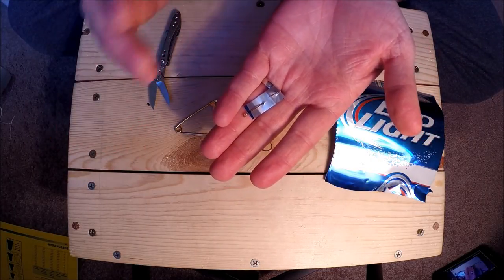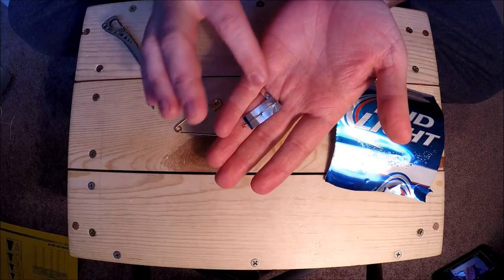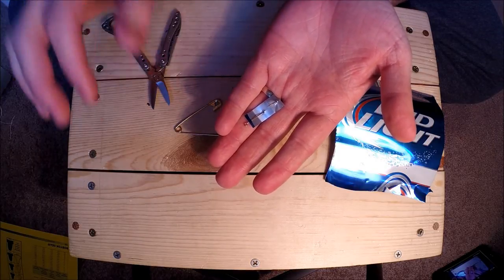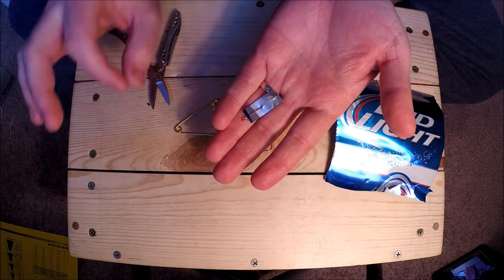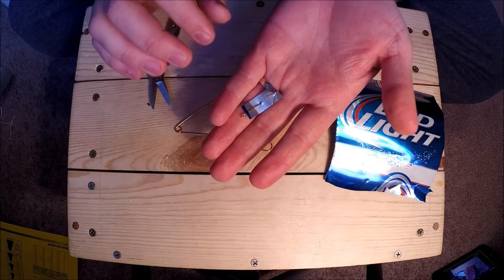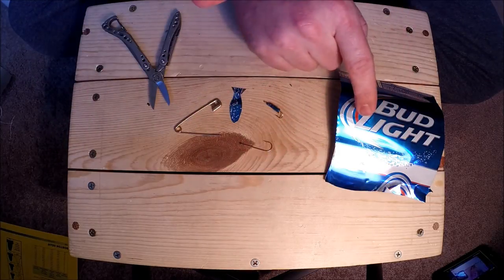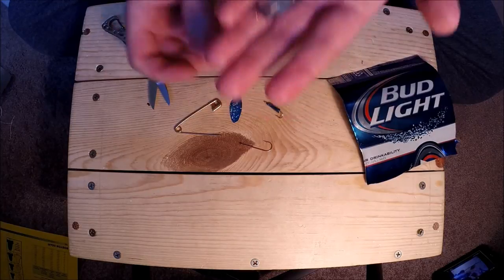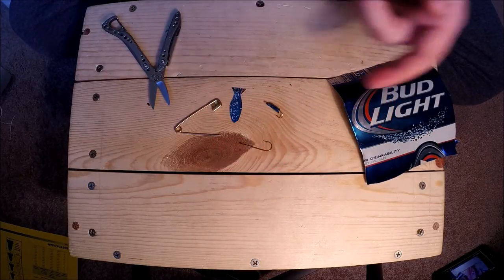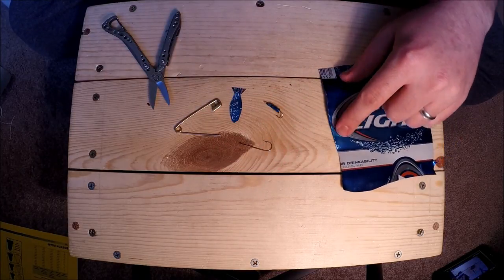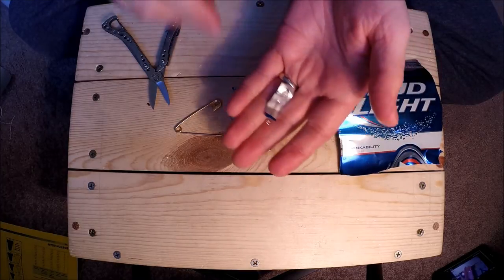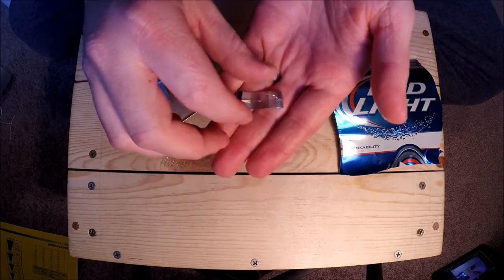These work okay, but the paracord fishing lures work a lot better than this. But you can find a lot of these beer cans just laying around most of the time out by your lake, so this one's a little more practical for finding your supplies.